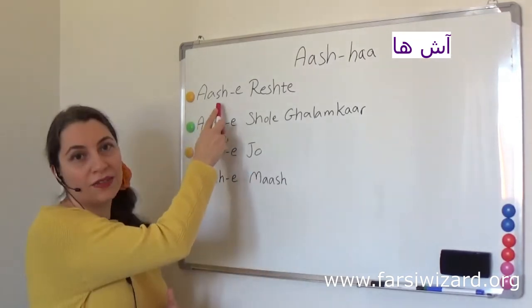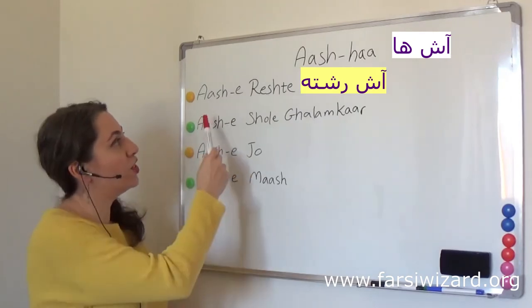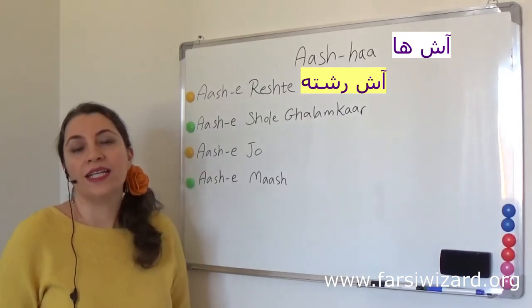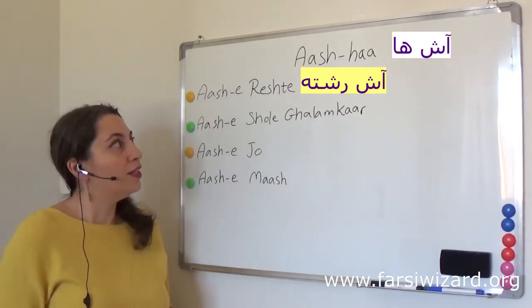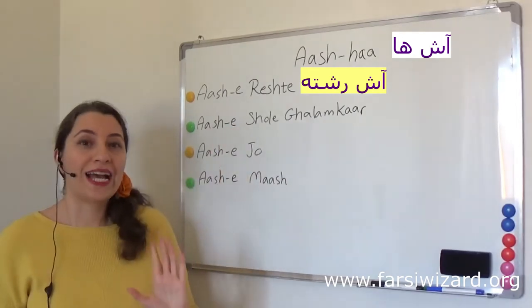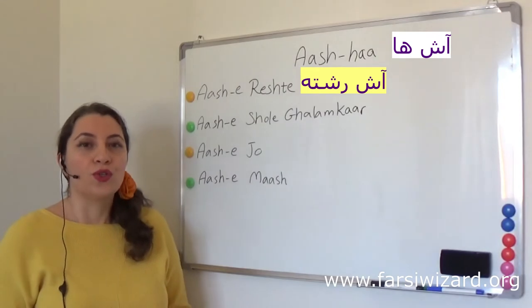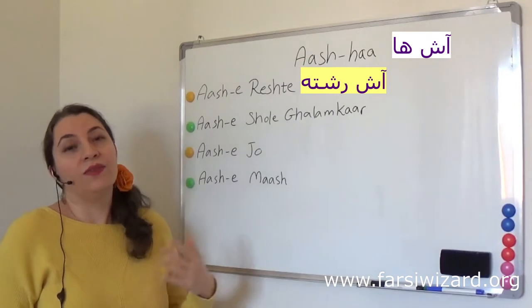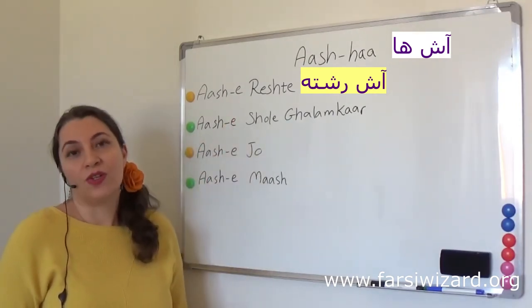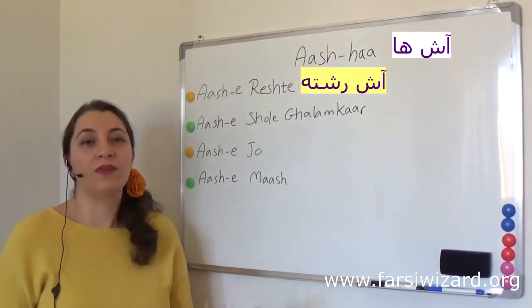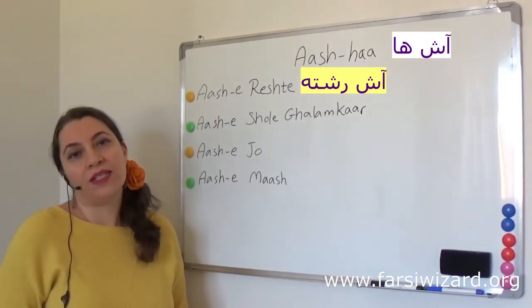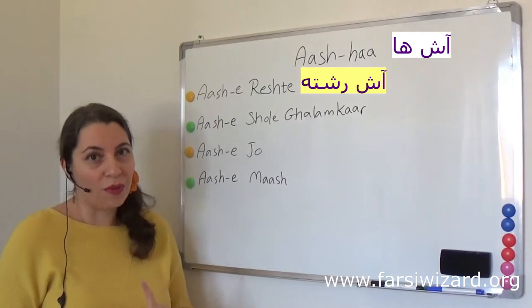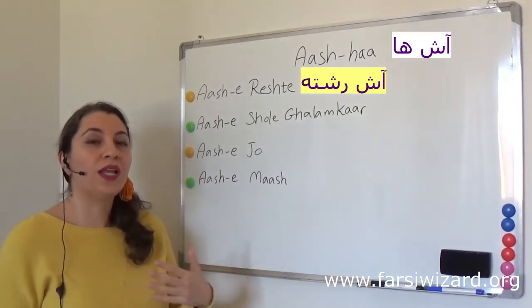Let's start with the first one: Ash-e-Reshteh. Reshteh actually means noodles, so this can best be translated as noodle Ash. In reality, Ash-e-Reshteh is the standard Ash for Nazr, the tradition I just told you about. A lot of times a neighbor may knock on your door bringing you Ash-e-Reshteh, also called Ash-e-Nazrih, meaning one of their wishes was fulfilled and they are fulfilling their promise to God by serving Ash. So Ash-e-Reshteh is the most common, most ritualistic Ash that we have.